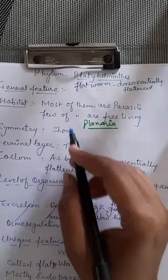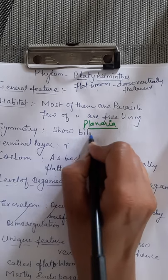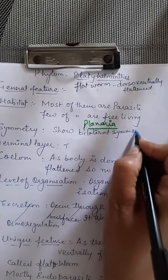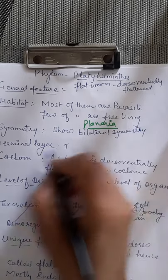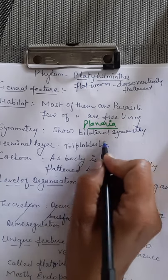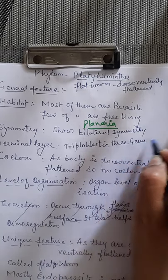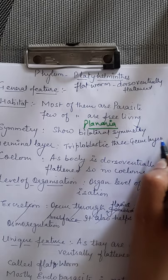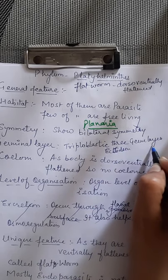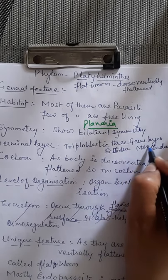Planaria shows high power of regeneration. The symmetry — they show bilateral symmetry. They are triploblastic, meaning they have three germinal layers: ectoderm, endoderm, and mesoderm.